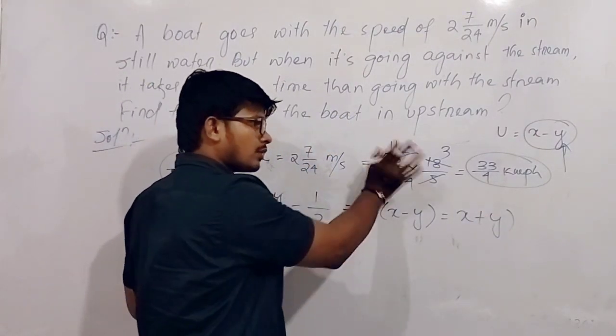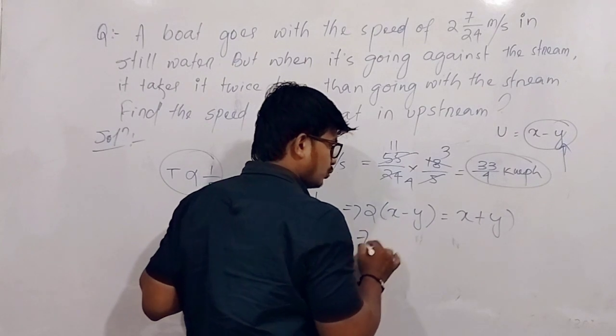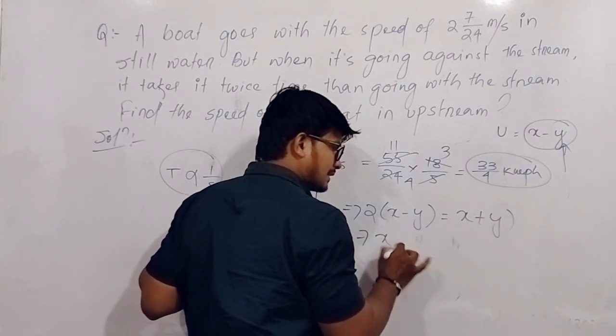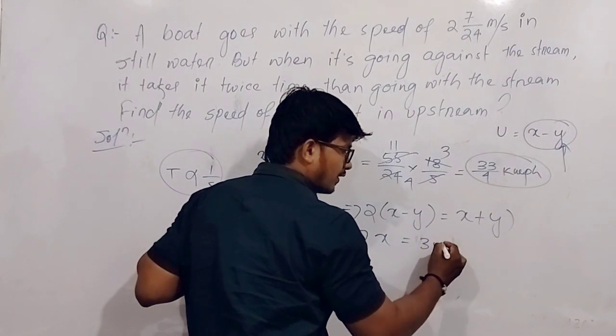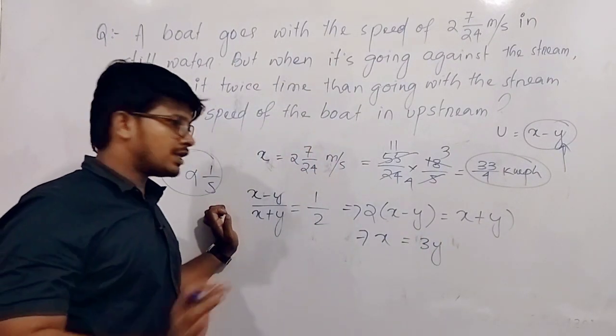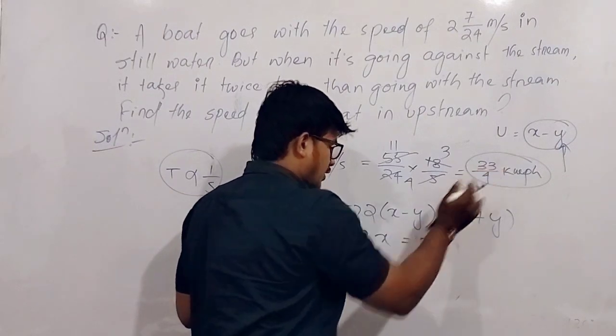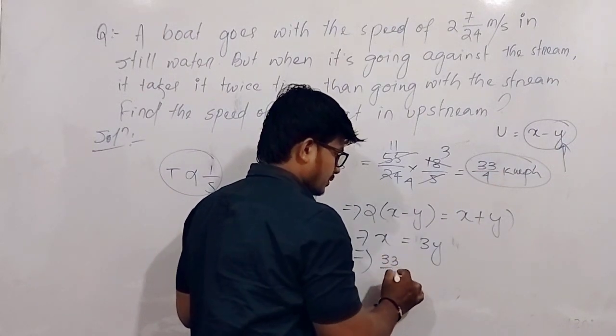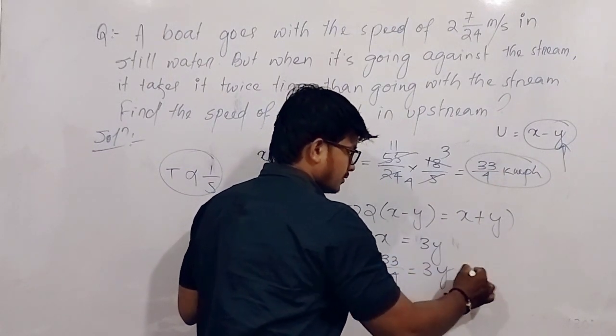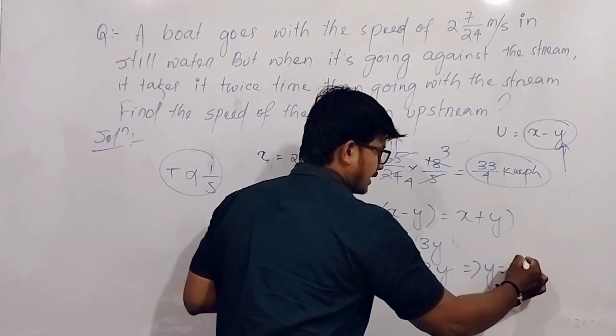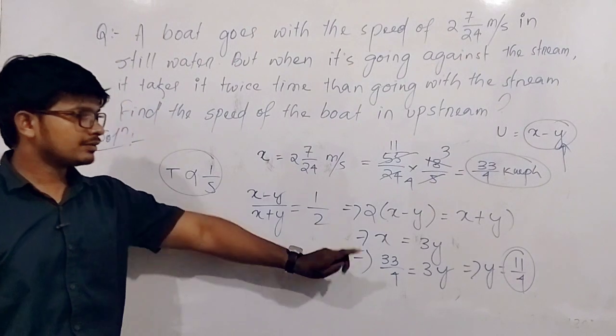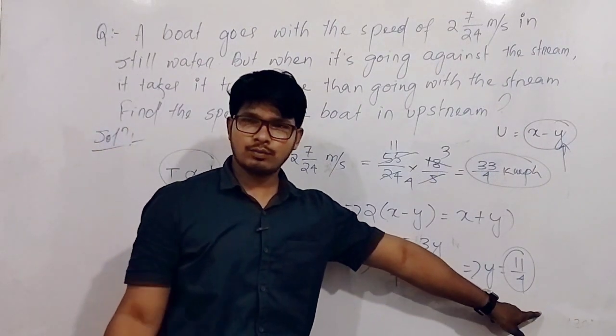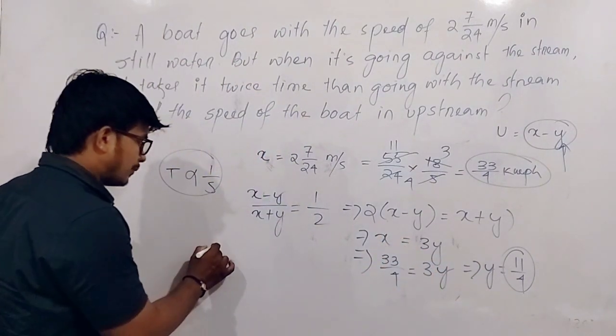Substitute x's value. So 2x here and x here gives us x. Minus 2y goes to the other side, plus y, so we get 3y. 3y equals what? x is 33/4, so 33/4 equals 3y. That implies y equals 11/4. Clear? We got y.